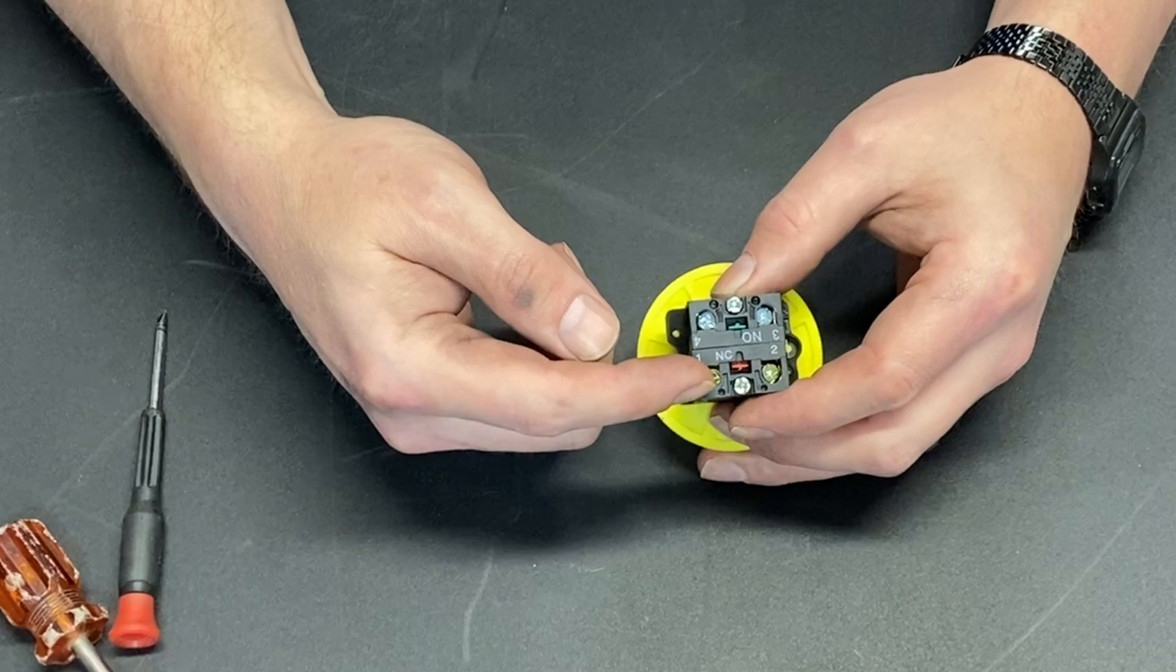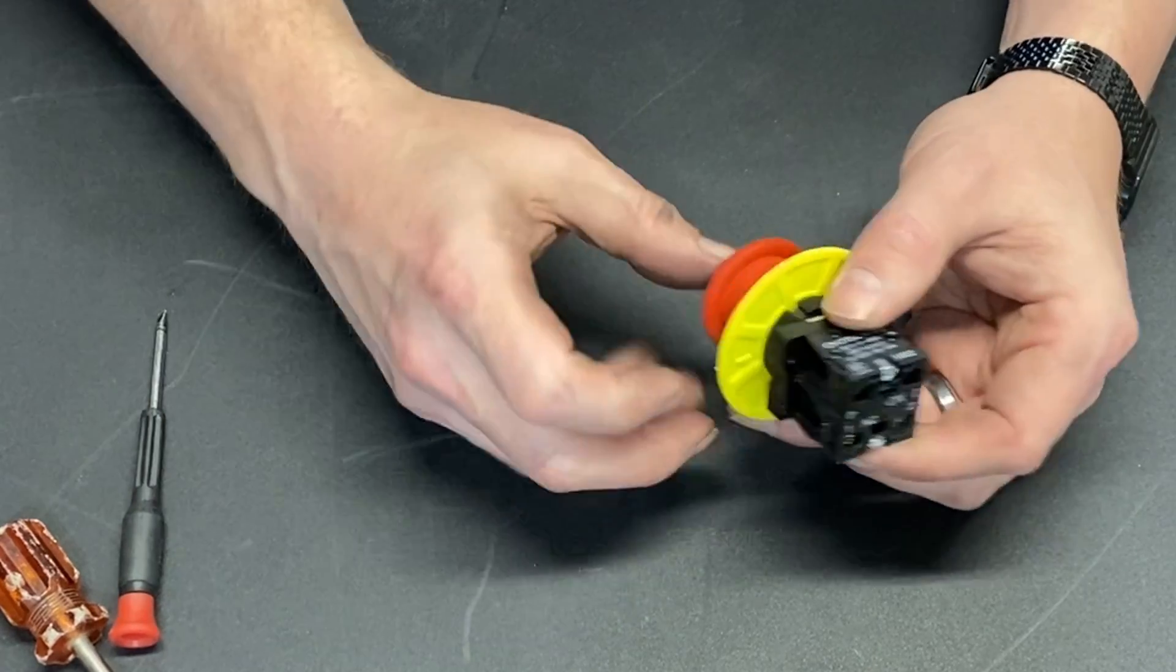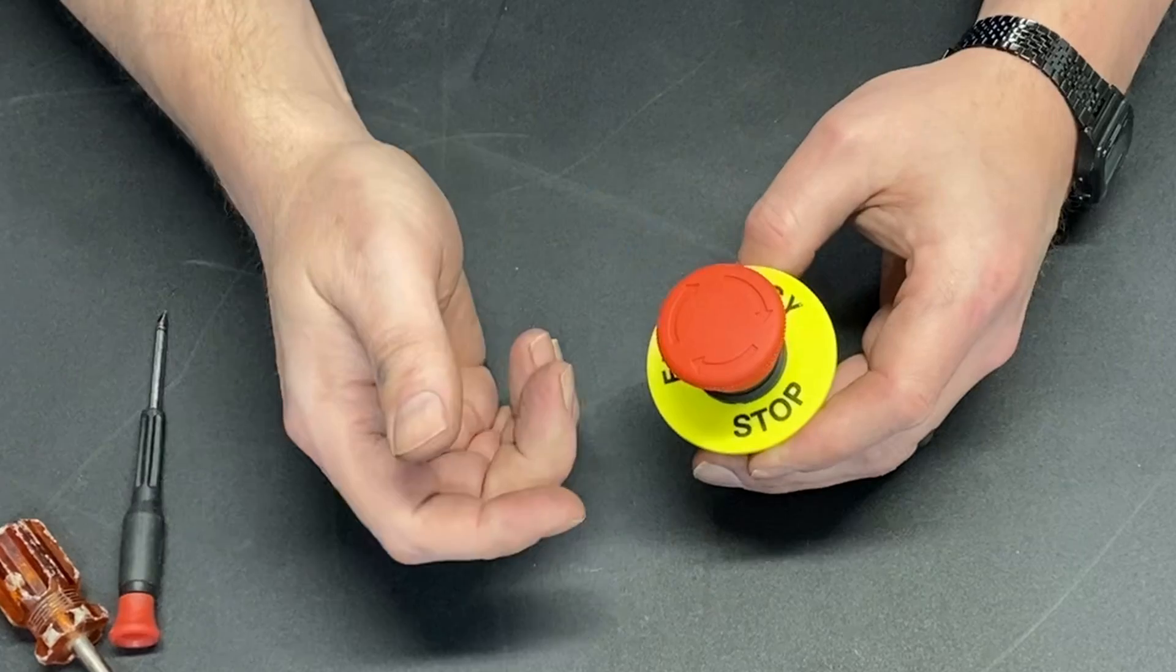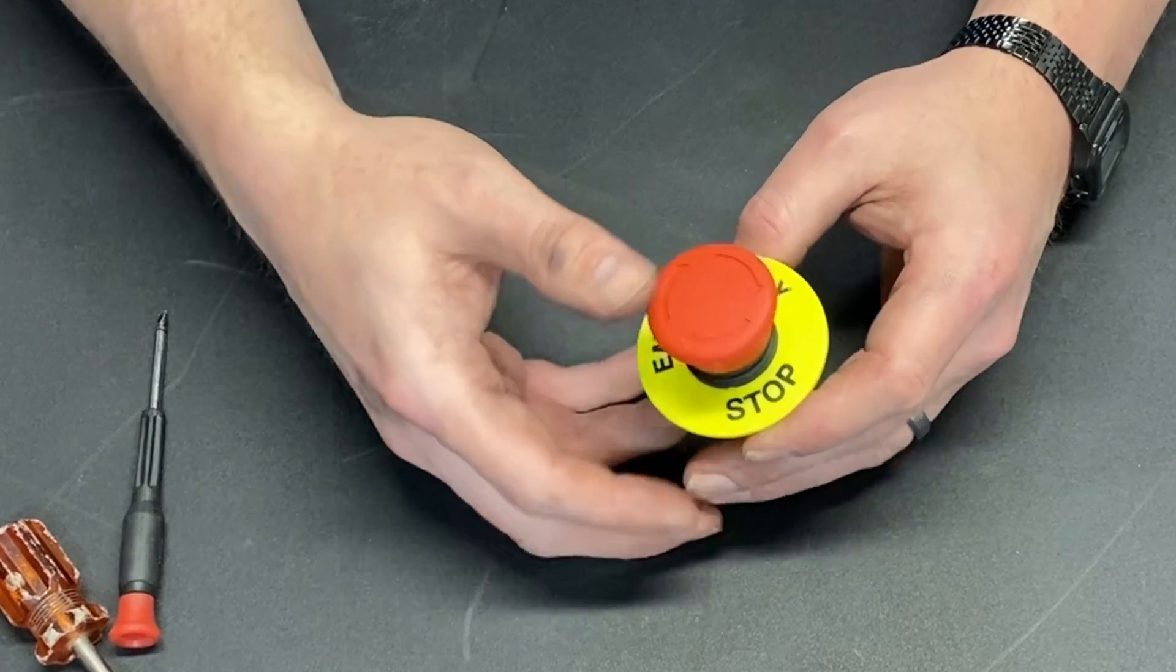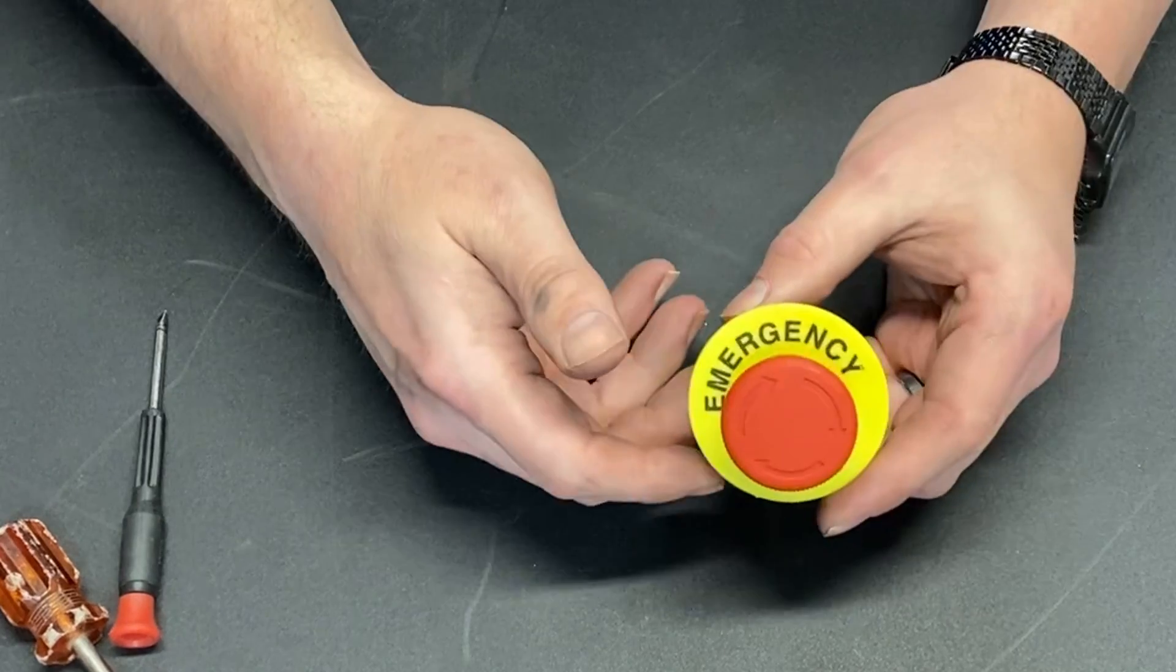The normally closed option would be for your power lead. You would hook it up when we are in the run position, power is flowing, and it works just as it's supposed to. We hit emergency stop, the connection is broken.